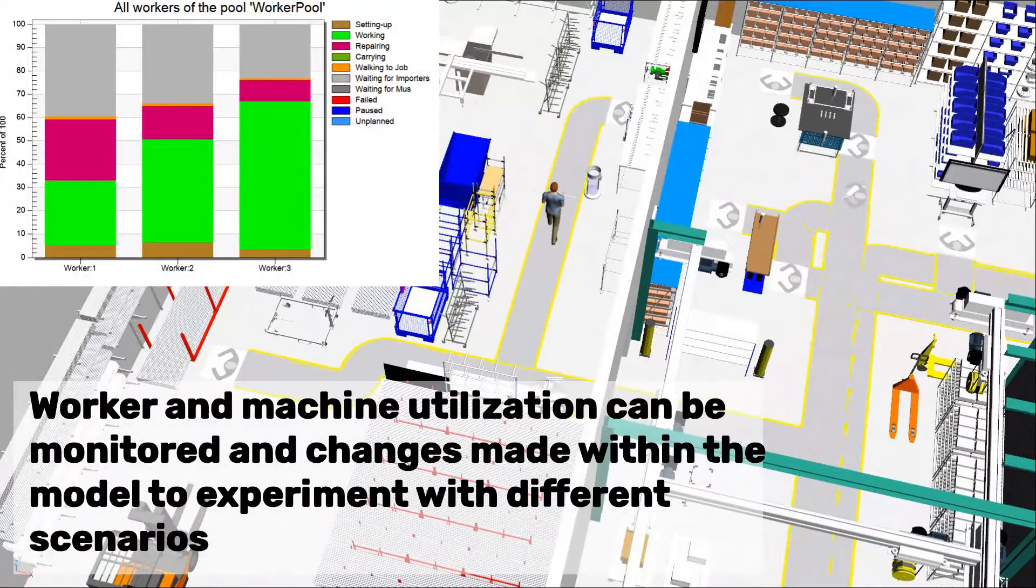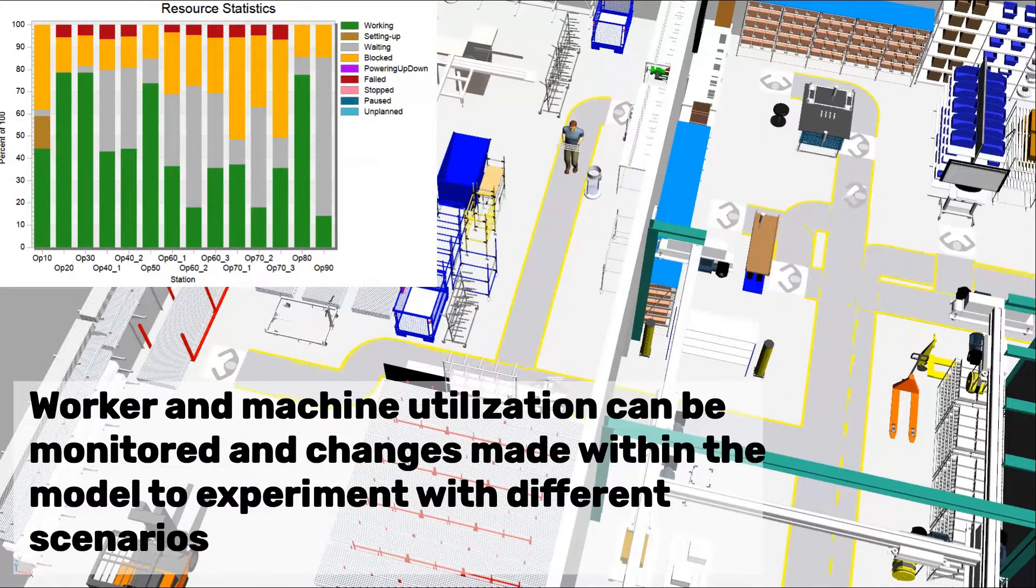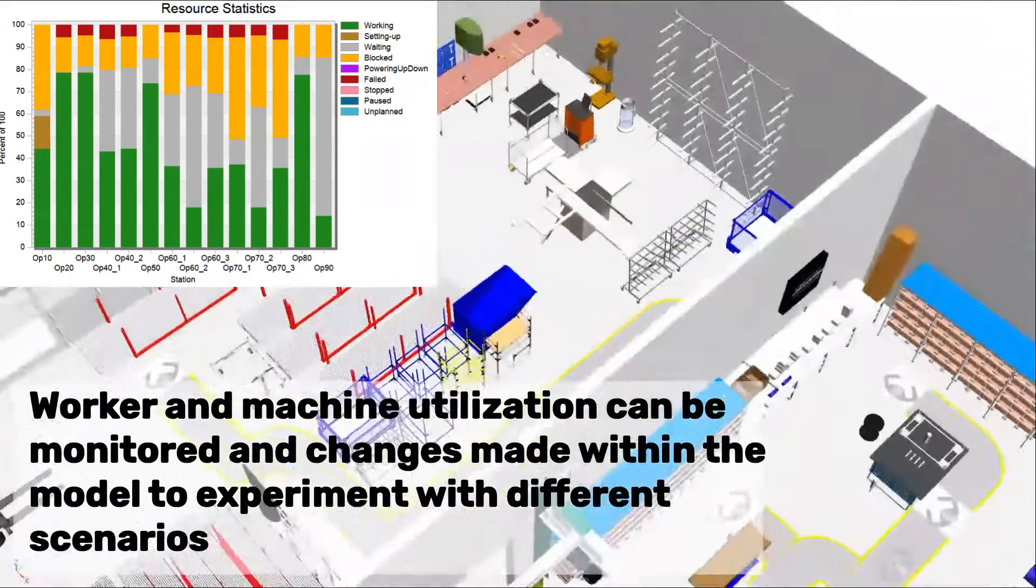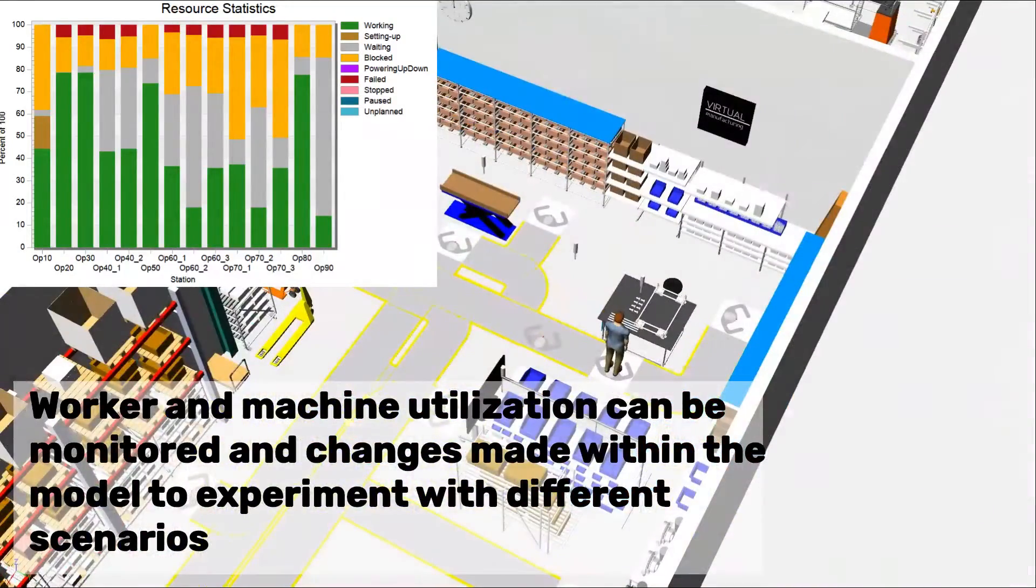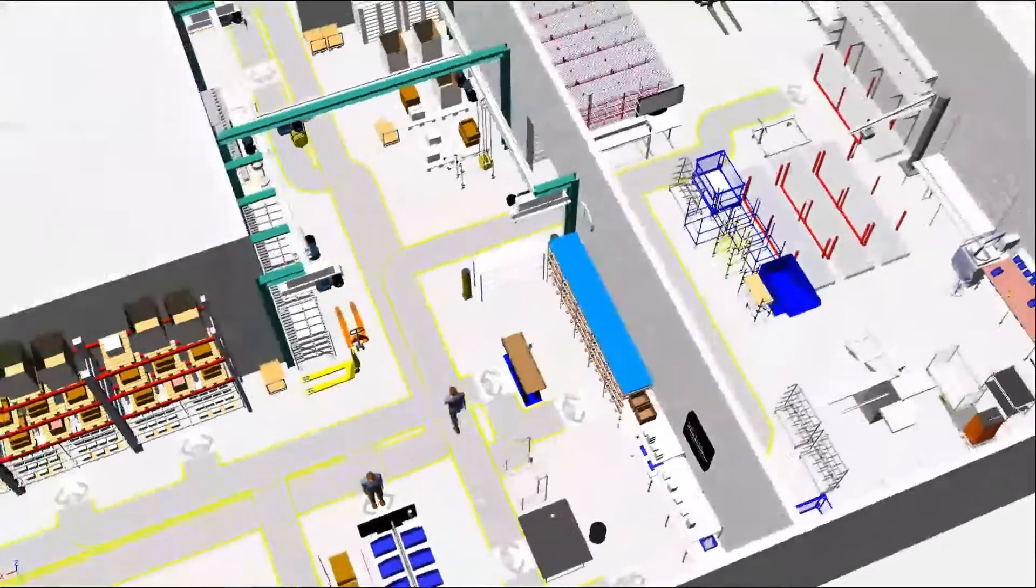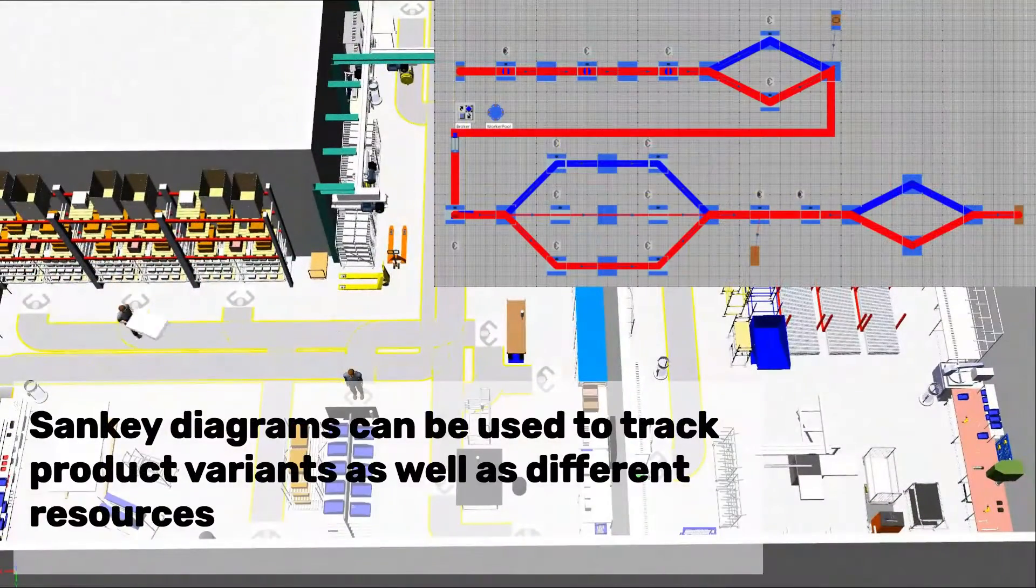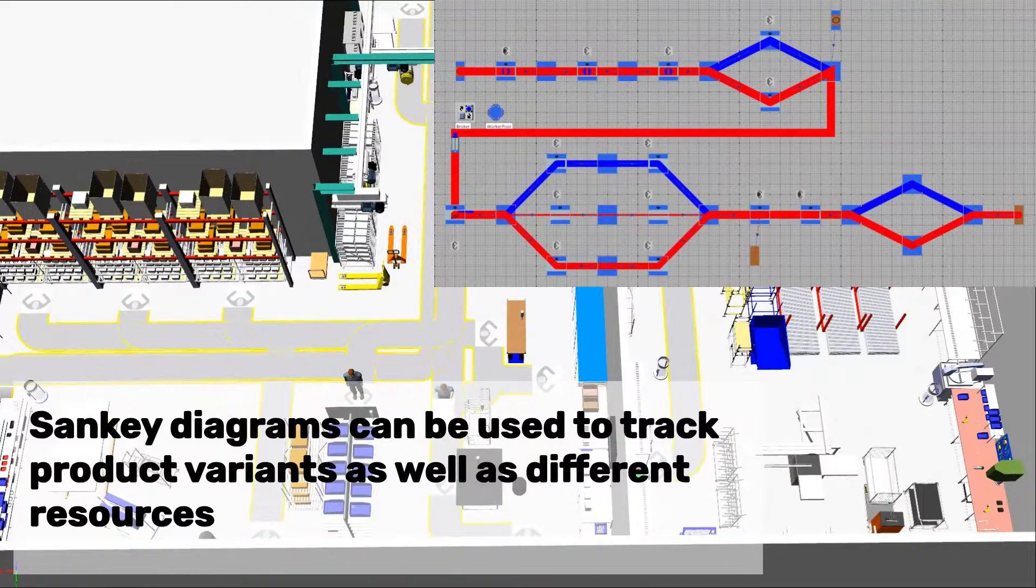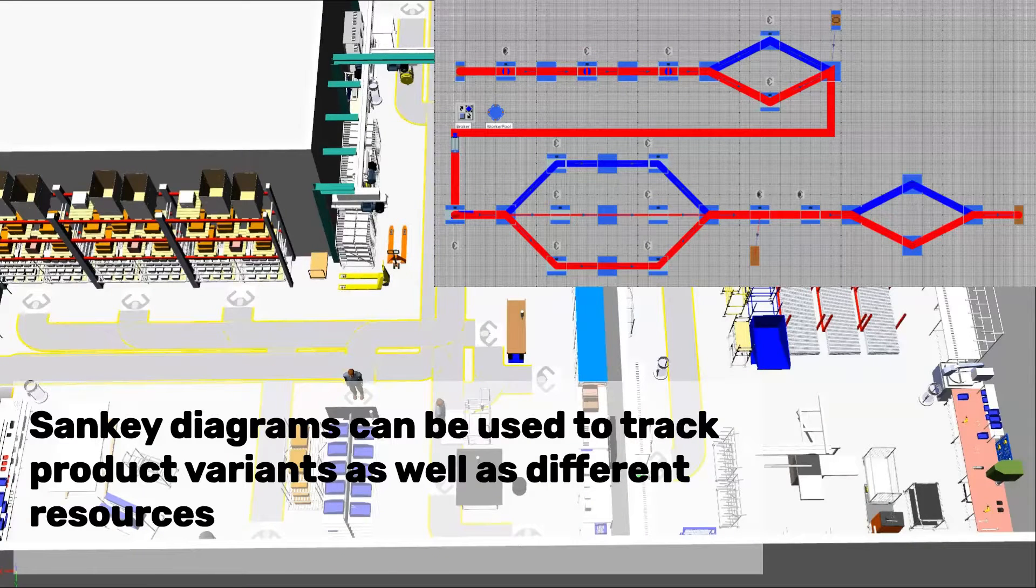Worker and machine utilization can be monitored and changes made within the model to experiment with different scenarios. Sankey diagrams can be used to track product variants as well as different resources.